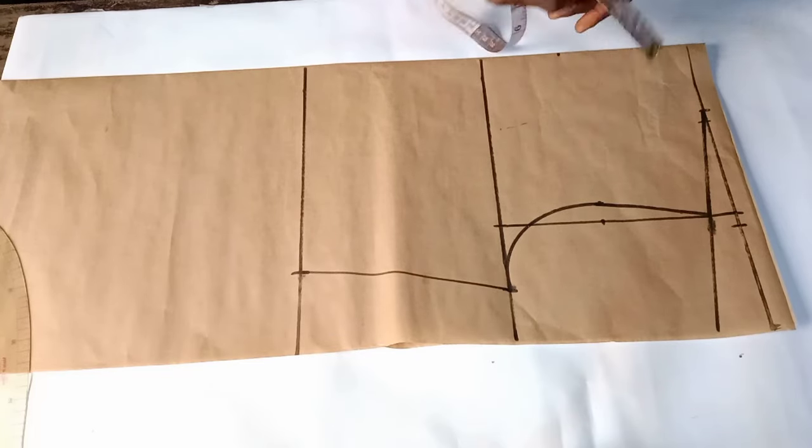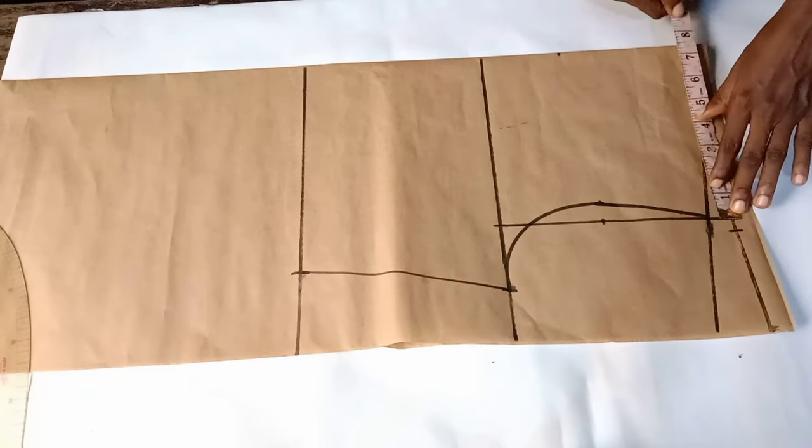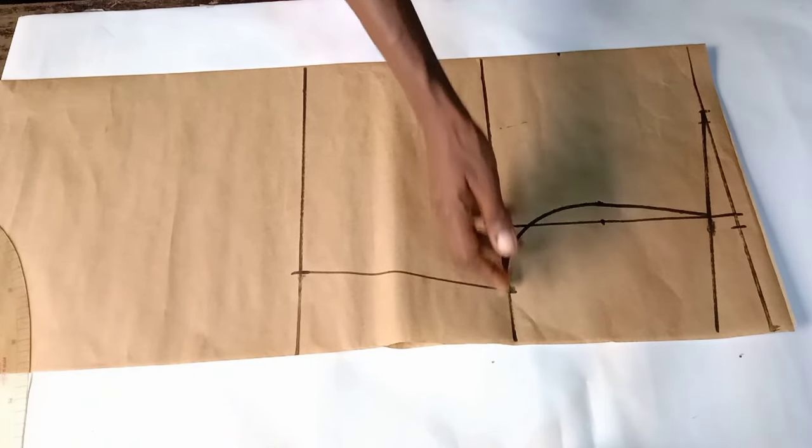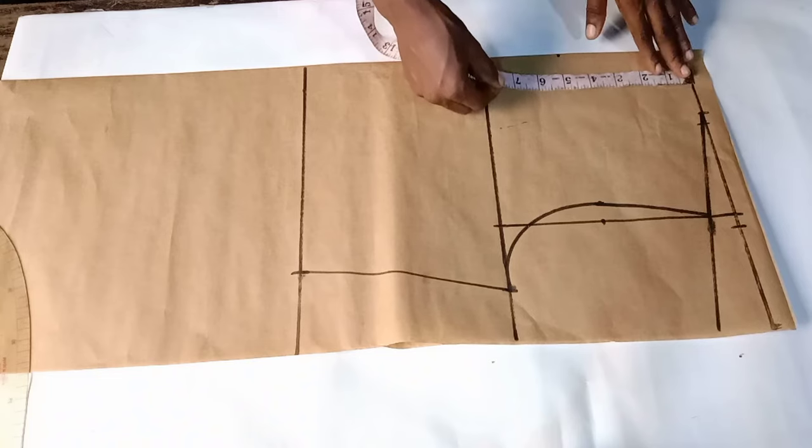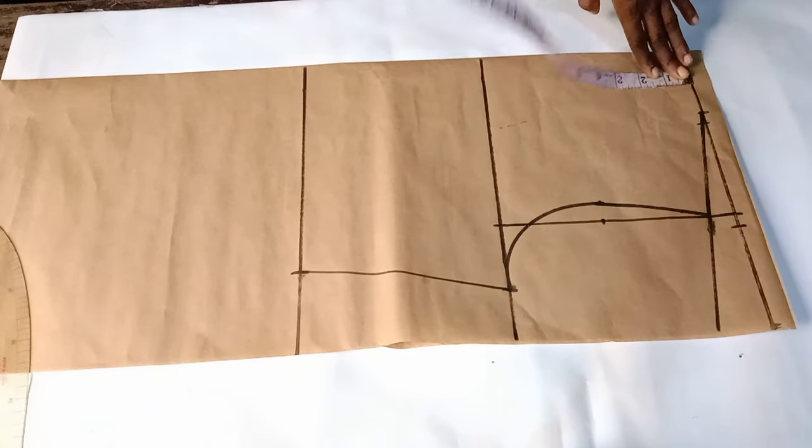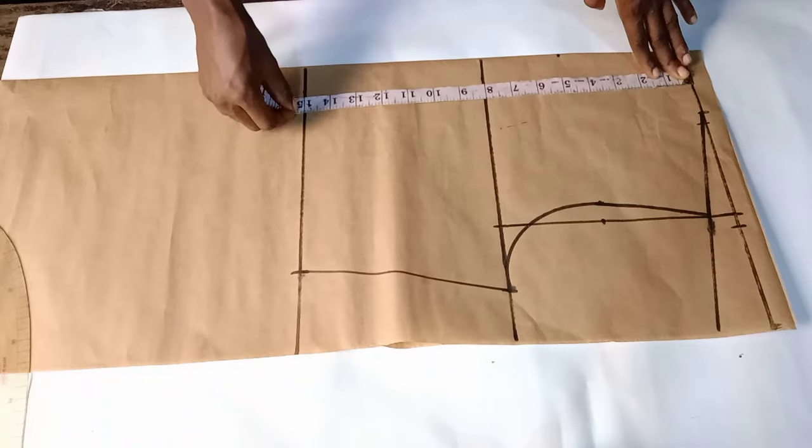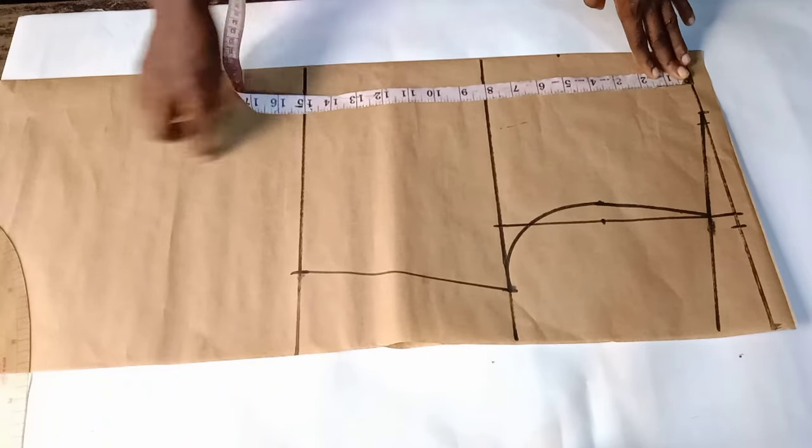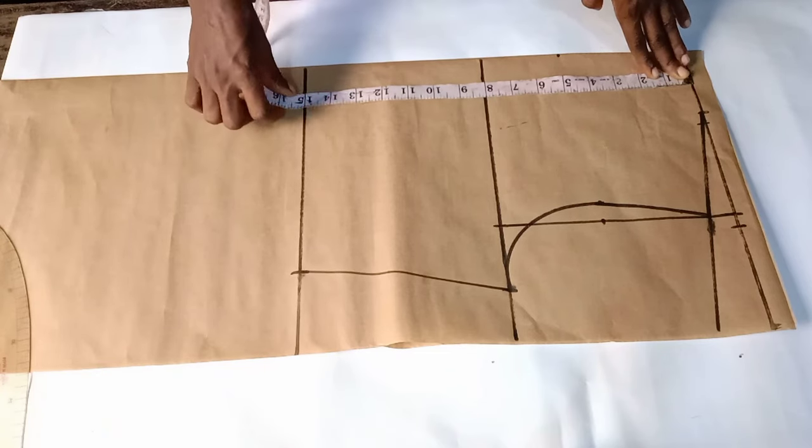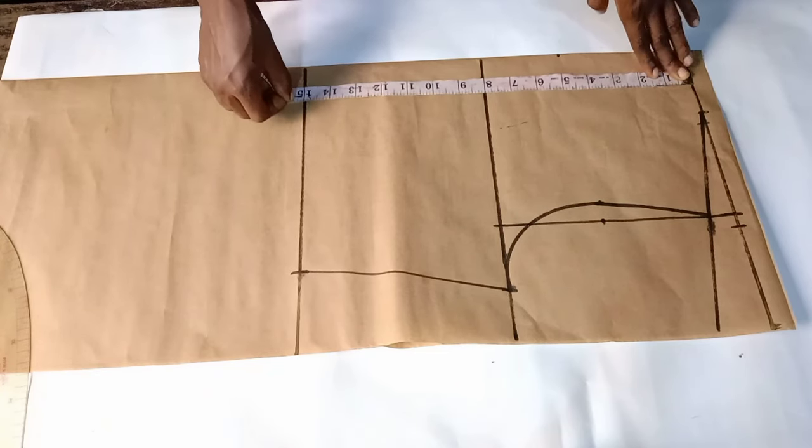So I have my shoulder measurement here which is seven and a half inches. From the starting line to the armhole line I have eight inches, and then I have 15 inches to the under bust line, inclusive of half inch to join it to the lower part, the skirt part.